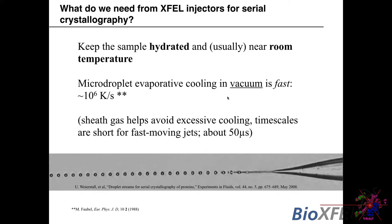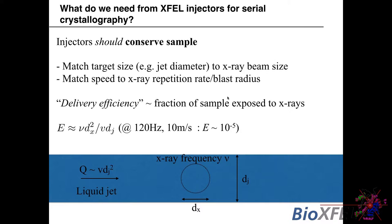The injector also needs to keep the sample hydrated and at room temperature, which is normally not a problem but one should be aware that droplets in a vacuum chamber cool pretty fast — micro-droplets can cool at rates on the order of a million kelvin per second. The good thing about most liquid jets is that there's a sheath gas that protects the jet until the very instant it ejects into the chamber. Jets are usually moving fast, so the time scales are on the order of 50 microseconds, and you might see only a couple of degrees change in temperature.